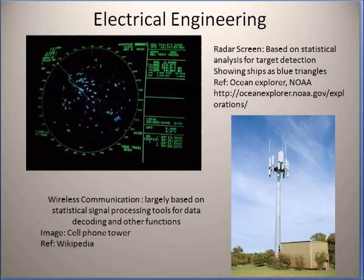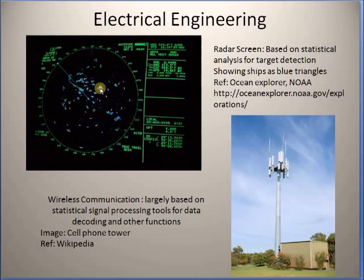Coming to applications in electrical engineering, radar can be described as a typical statistical signal processing application. One common goal of a radar system is the detection of targets. This map basically shows different results in a given region of an ocean, where each of these little triangles denotes a ship. Deciding whether each return on the radar screen is a ship or not basically depends on statistical methods for analysis.